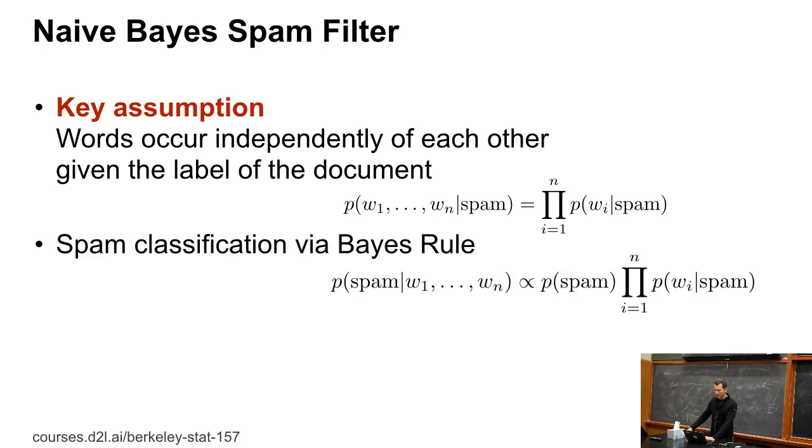And so then, if I make this assumption, then P of spam given the words, by Bayes' rule, is just proportional to P of spam times the product.